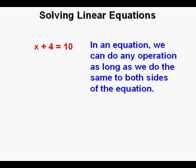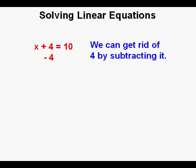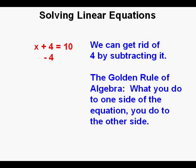Now about solving for unknowns: we can do any operation — divide, subtract, square, take a square root, or any operation — as long as we do the same to both sides of the equation. In order to find the value of x, we need to get x by itself. The operation we need to do is get rid of the 4, and we can do that by subtracting it. We always follow the golden rule of algebra: what you do to one side of the equation, you do to the other side. So we subtract 4 from the other side of the equation as well.